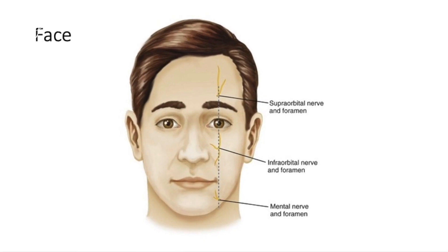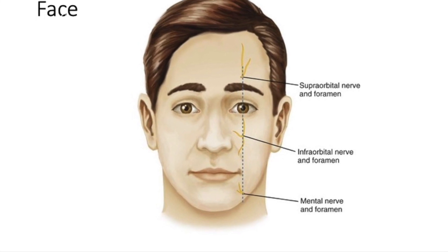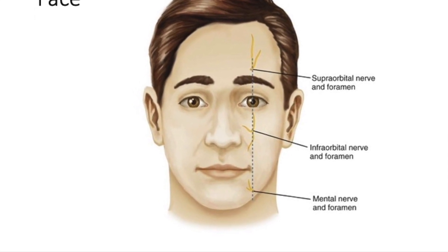Now let's look at the nerves of the face. At the midpoint of the orbit is the supra-orbital nerve. About 1–2 cm below in the midline is the infra-orbital nerve on the cheek. About 1 cm below the corner of the lip is the mental nerve. These blocks will anesthetize from the midline to the lateral edge of the face on each side.